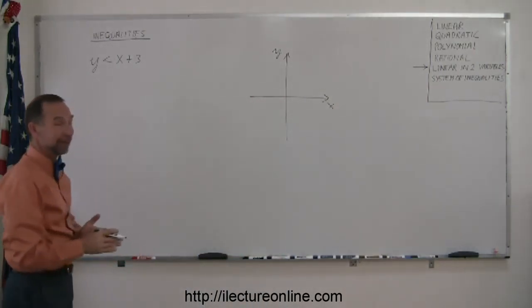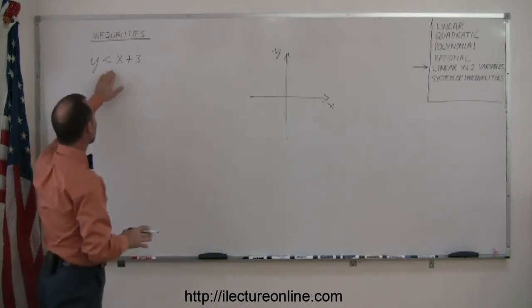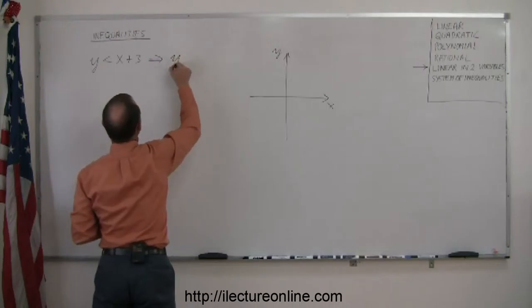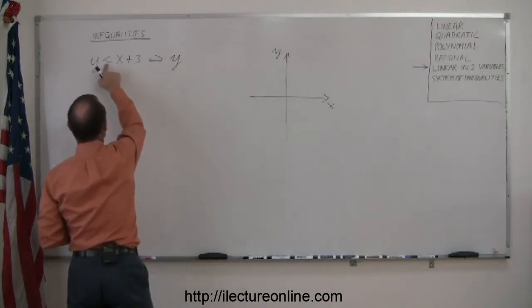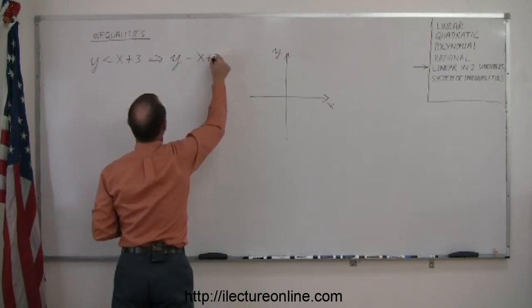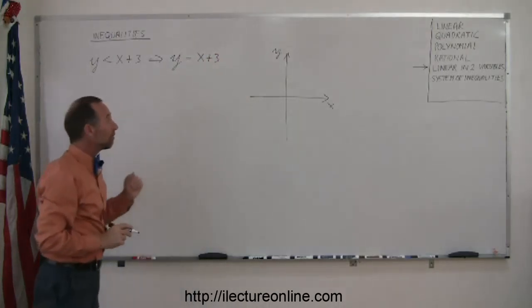To find that region, we want to find the boundary. The boundary can be found by taking this inequality and writing its equivalent equation by changing the less than sign to an equal sign. Then we graph that equation.